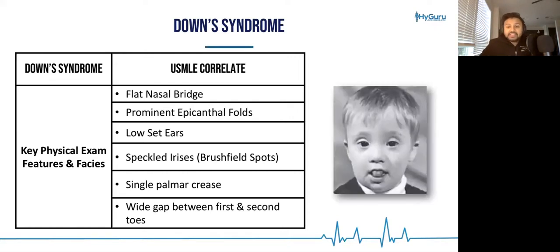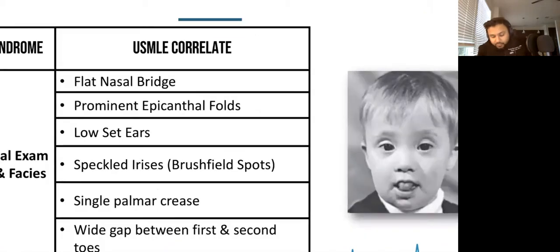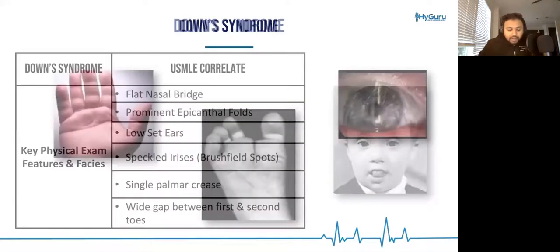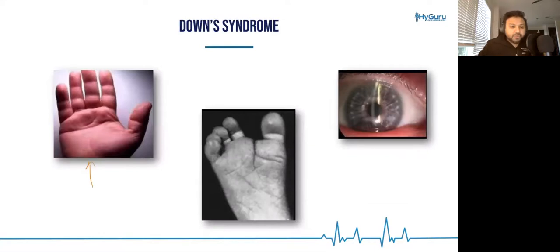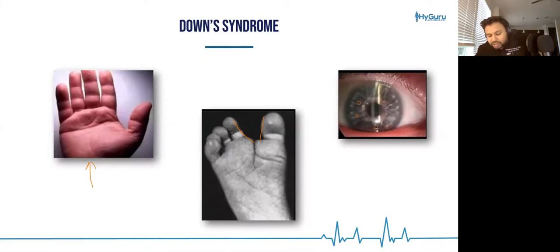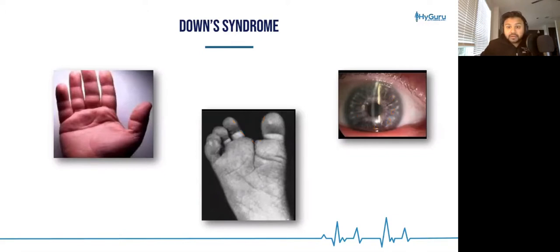Let's integrate this. We see the flat nasal bridge, the prominent epicanthal folds, and the low set ears related to trisomy 21. This picture is representative of the single palmar crease. This gap between the toes is known as sandal gap toes. And these speckled portions of the colored part of the eye are known as Brushfield spots.